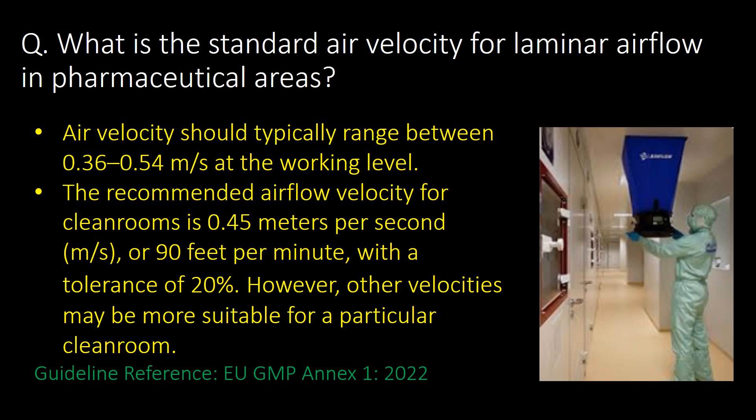What is the standard air velocity for laminar airflow in pharmaceutical areas? Air velocity should typically range between 0.36 to 0.54 meters per second at the working level. The recommended airflow velocity is 0.45 meters per second, or 90 feet per minute, with a tolerance of 20 percent. However, other velocities may be more suitable for particular clean rooms. Reference guideline: EU GMP Annex 1.